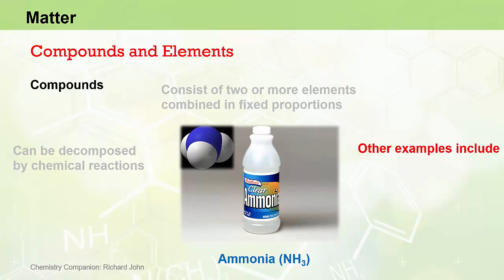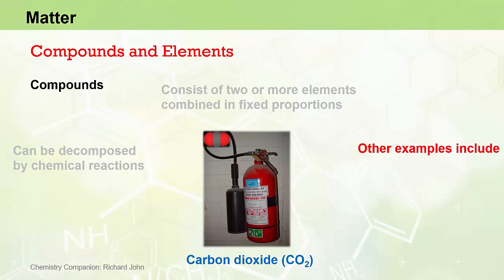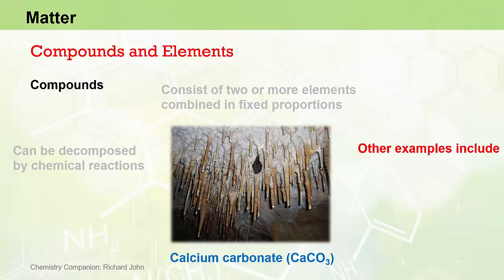Ammonia, NH3, a compound used in household cleaning products, consists of the elements of nitrogen and hydrogen in a one to three ratio. Carbon dioxide, CO2, is a greenhouse gas and the gas that we exhale as part of respiration, and it consists of the elements of carbon and oxygen in a one to two ratio.